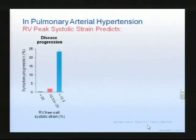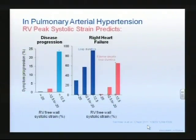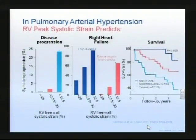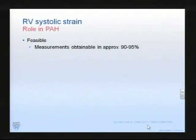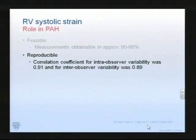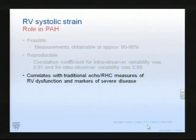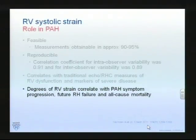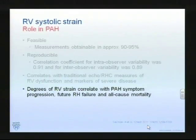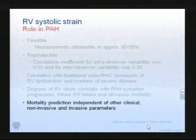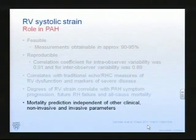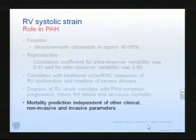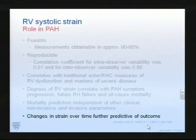Longitudinal peak systolic strain predicts disease progression relatively well in both pulmonary hypertension and right heart failure, and it predicts survival. Right ventricular systolic strain is reproducible; it correlates with ECHO measurements of right ventricular dysfunction and markers of severe disease. It correlates with pulmonary artery symptoms as well as specifically right heart failure and cause-specific mortality. Above everything else, it is valued because it has the potential to be an independent variable amongst a clutter of interactive variables.